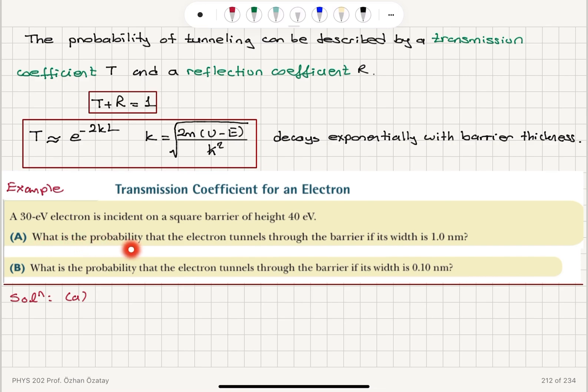Part A: what is the probability that the electron tunnels through the barrier if its width is 1 nanometer? Part B: what is the probability that the electron tunnels through the barrier if its width is 0.1 nanometers?